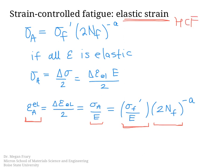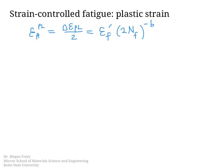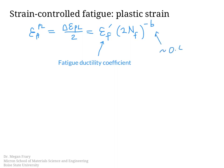Now let's consider what happens with plastic strain. Where strain is plastic rather than elastic, the plastic strain amplitude equals the fatigue ductility coefficient multiplied by the number of reversals to failure raised to a different exponent 'b'. The exponent b is sometimes taken as positive, with values ranging from about 0.4 to 0.75. The fatigue ductility coefficient depends on the hardening behavior of the material as it undergoes plastic deformation.